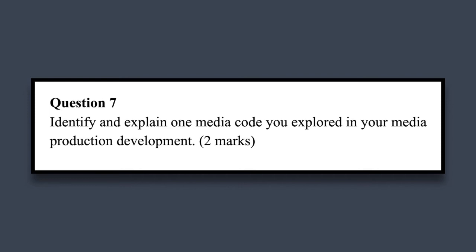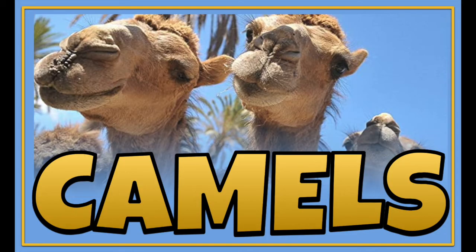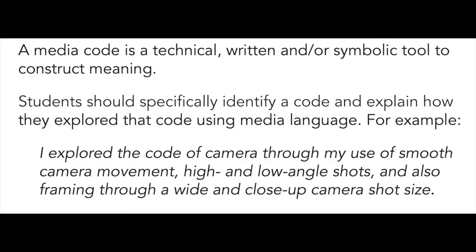The next question: identify and explain one media code that you explored in your media production development. Here's a quick recap of the codes: camera techniques, acting, mise-en-scène, editing, lighting, sound. A media code is a technical, written, or symbolic tool to construct meaning, or could be a combination. Students should identify just one code and explain how they explored it using media language. For example: 'I explored the code of camera through my use of smooth camera movement, high and low angle shots, and framing through wide and close-up shot sizes.'